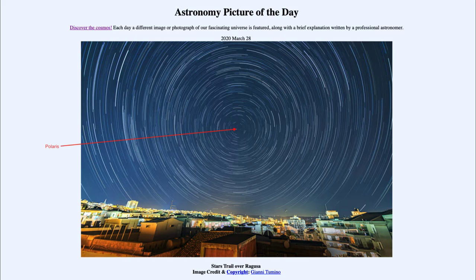Polaris is the star that happens to be very close to the North Celestial Pole. You can actually see in this image that it is not exactly at the pole, because it is also making a very small arc around. So Polaris is moving. While it is very close to the pole and helps identify the location of the North Celestial Pole in the Northern Hemisphere, it is not actually there. In fact, it's getting a little bit closer, and over the next 50 to 100 years it'll reach its closest and then start getting further away.